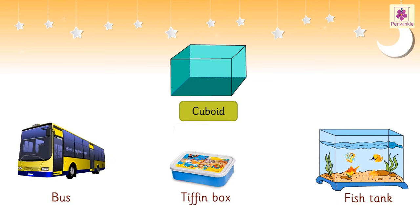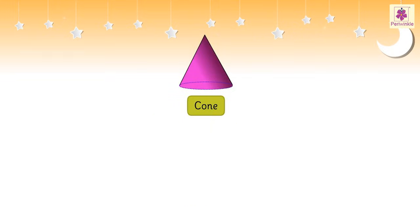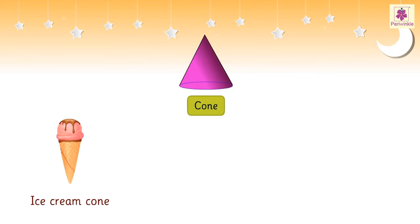This is a cuboid. A bus, a tiffin box, and a fish tank are all examples of a cuboid.